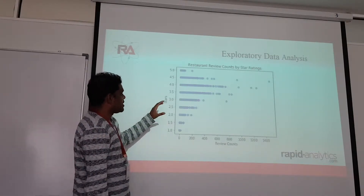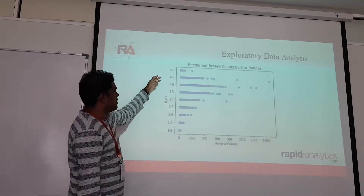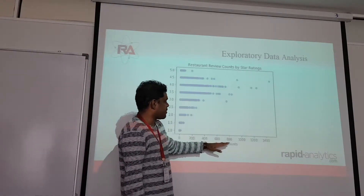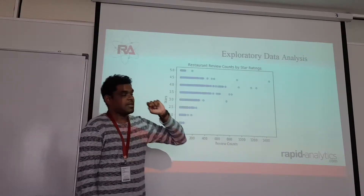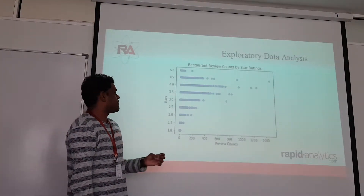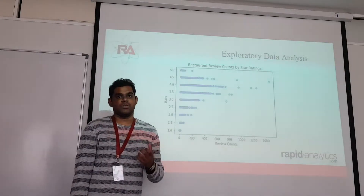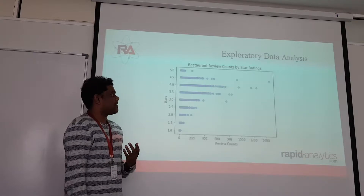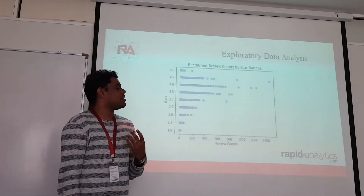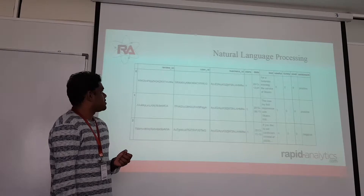From the EDA, we can see that there is more data available for 3.5 to 4.5 stars. We are not looking at 4.5 and 5.0 stars because those are established and well-known restaurants — not suitable for a new restaurant to compare against. We will focus on 1 to 3.5 stars, which is the average range, to analyze the positive and negative comments to help our client decide what business category to start with.